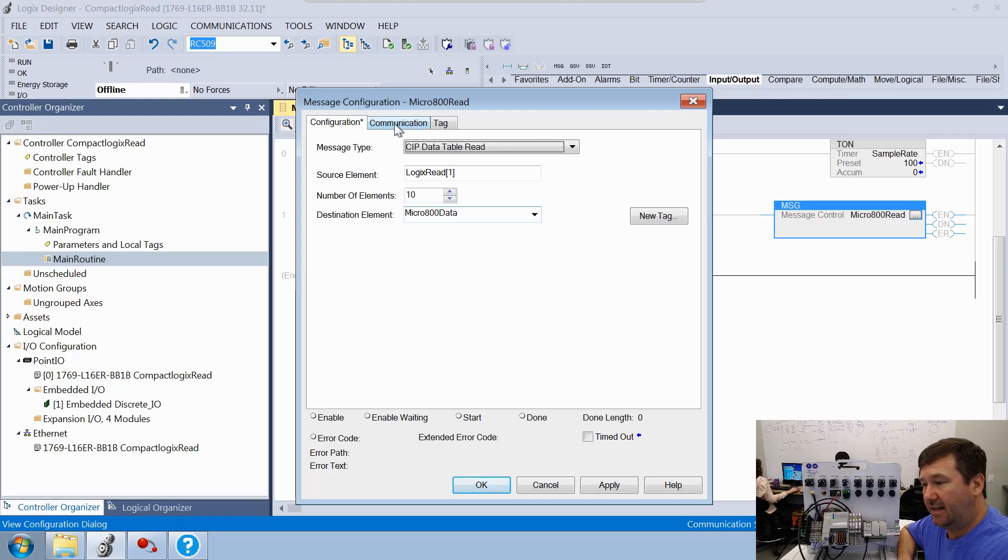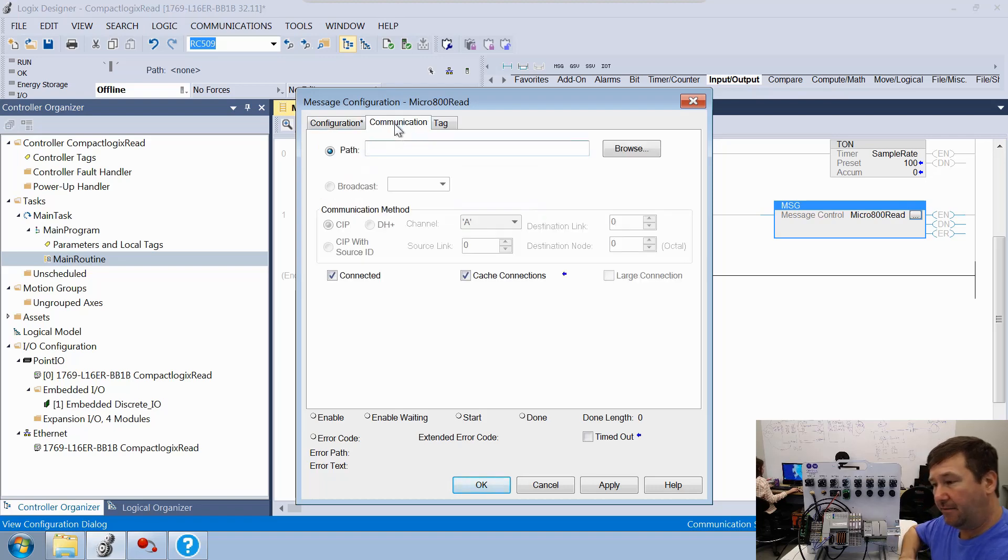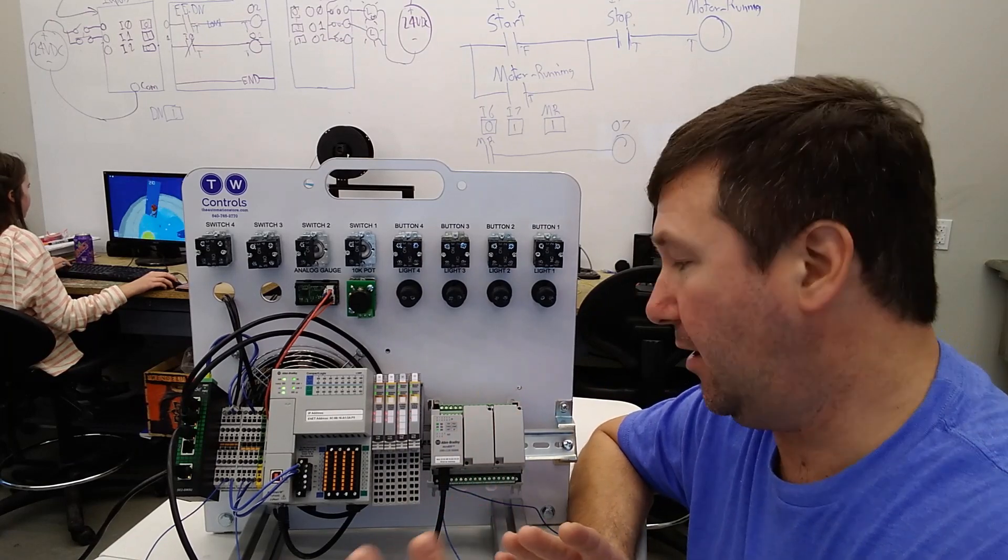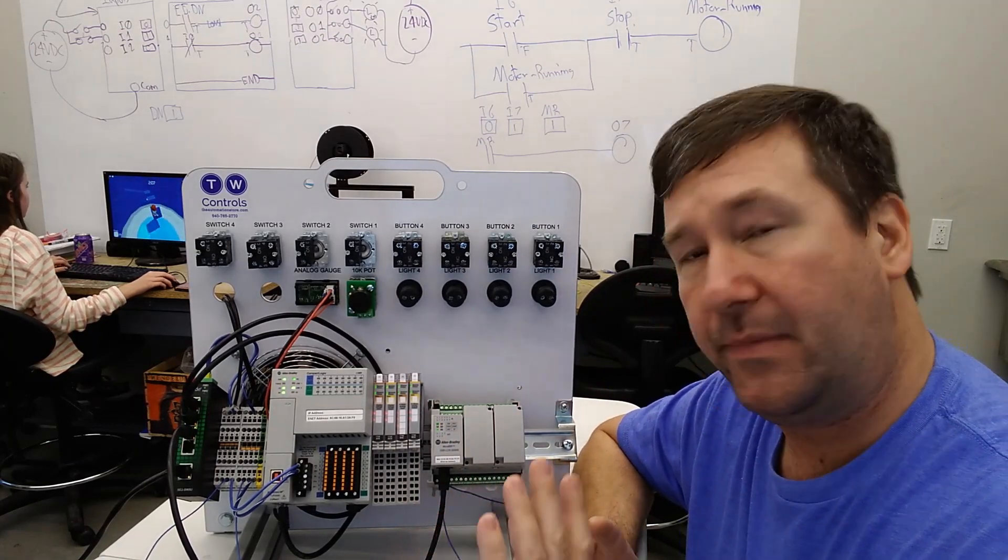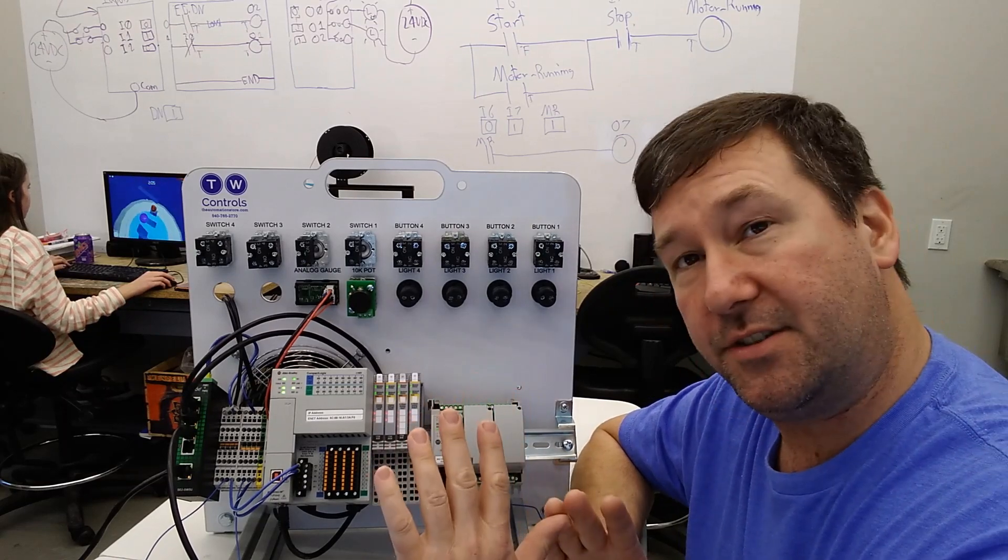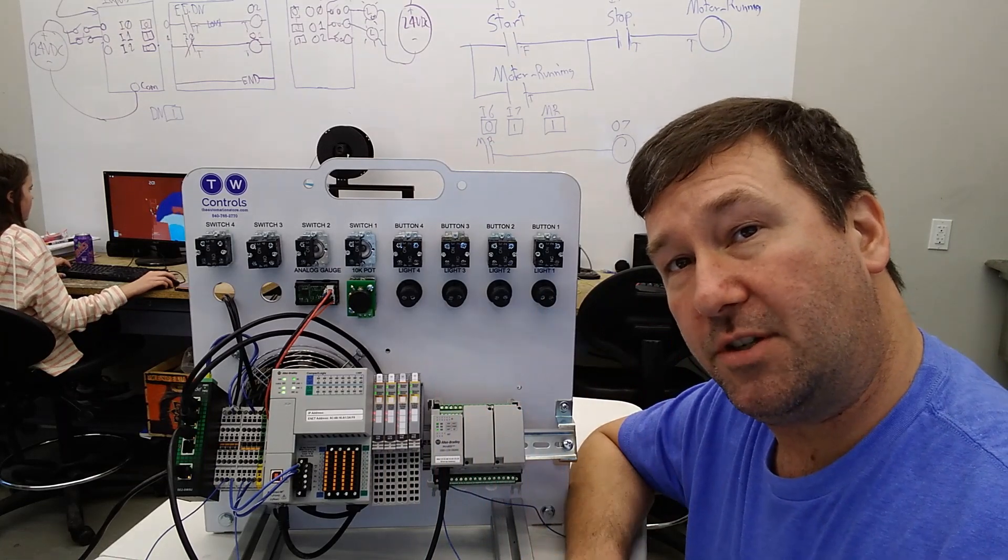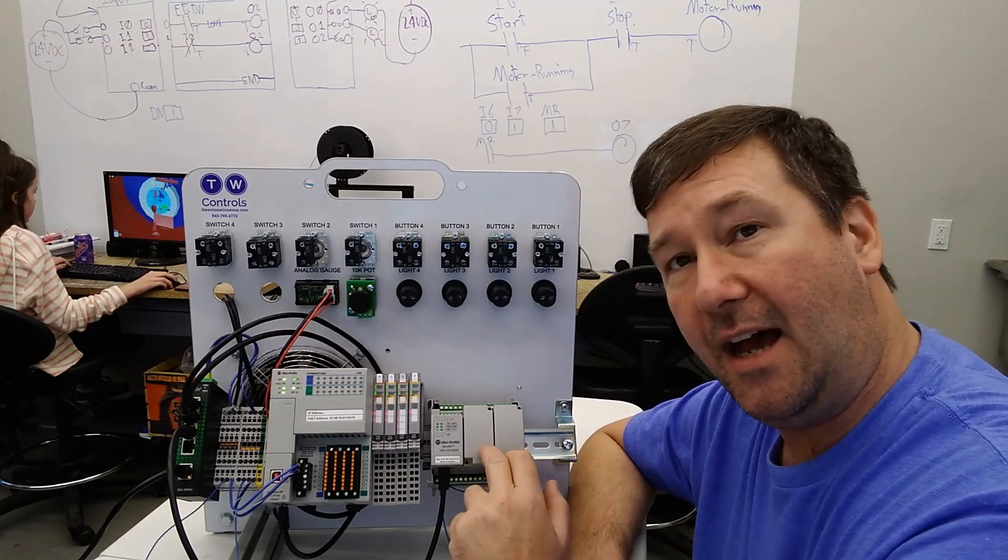The next thing we need to do is set our communications path. This is a little tricky. The first number is a little tricky, and we're going to go through more detail of that in a later video. But for our quick message instruction, we need to use the number two, comma, and the IP address.